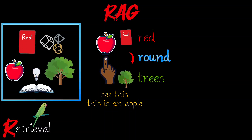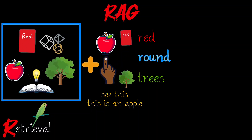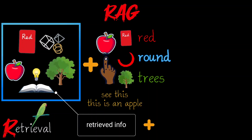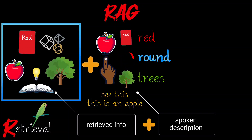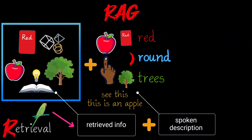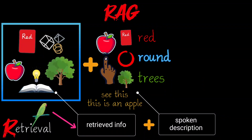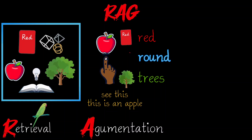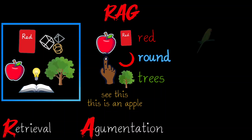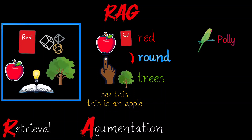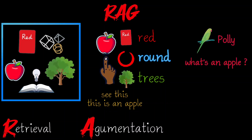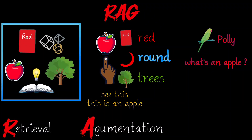You are combining the pictures — that is the retrieved information — with the spoken description to help Polly understand. This comes under augmentation. And now when you ask Polly 'What's an apple?' she might finally mimic back a meaningful answer.